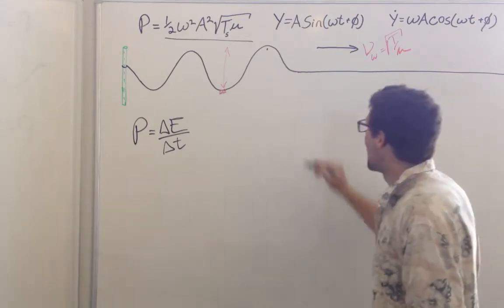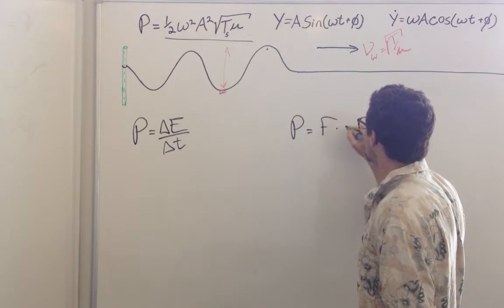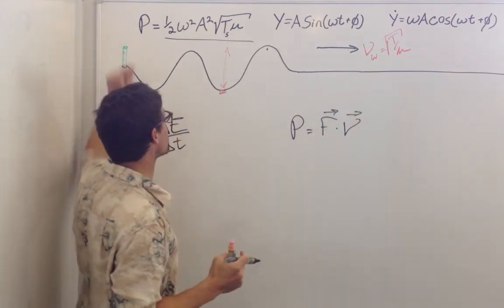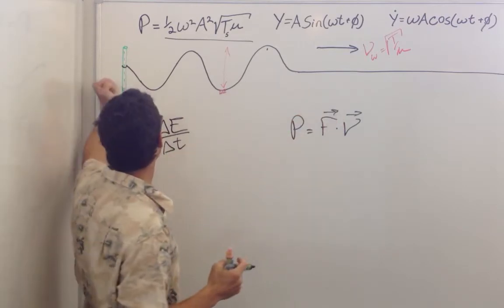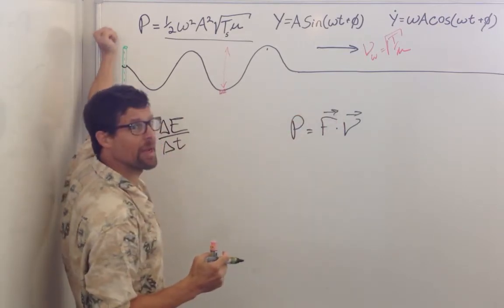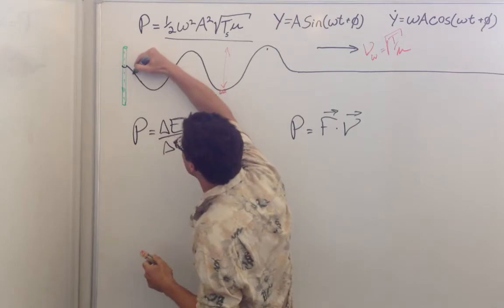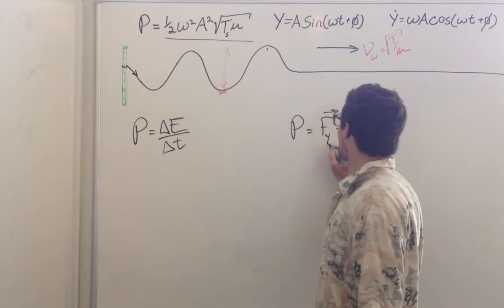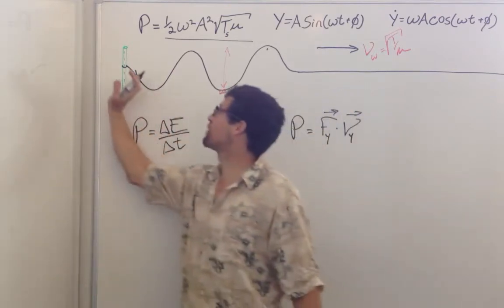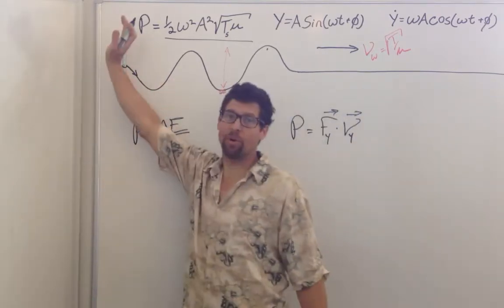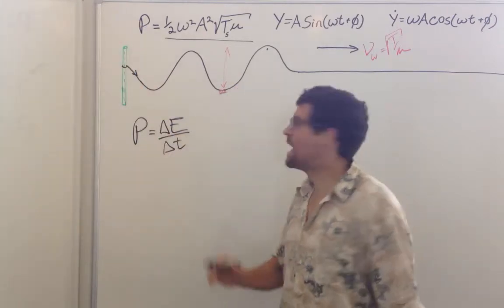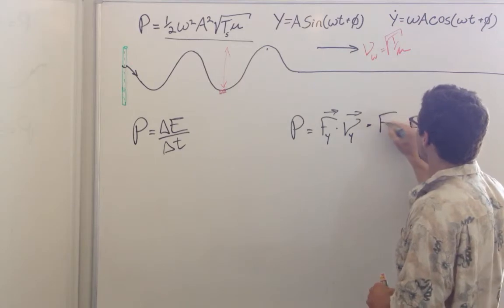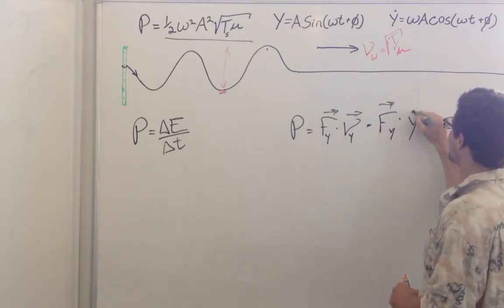Also, I know that power is equal to force times velocity. In order to start this wave propagating this energy, I'm going to have to push up on this string — because it's pulling down on me, there's tension here — and I have to pull up with some velocity. So there's a y-component of force that I have to provide when pulling up with the y-component of velocity. To avoid mixing this up with the speed of the wave, let's write force in the y direction times y-dot.